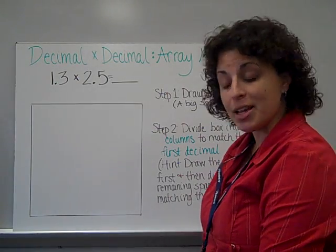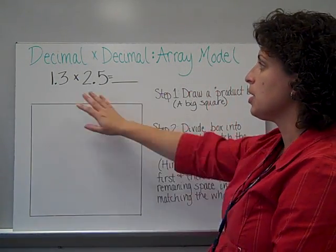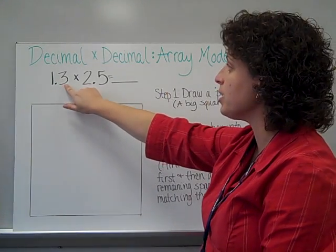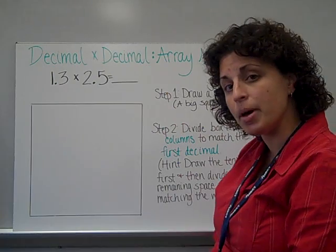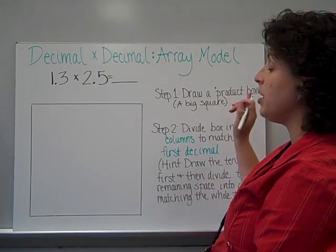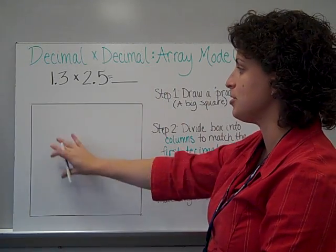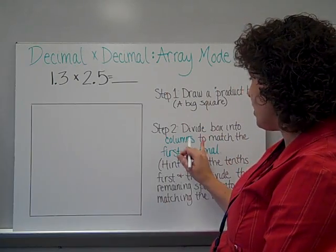Our next model is for a decimal times a decimal, and it's called an array model. Our problem this time is 1.3 times 2.5. And this model is a little bit more complex. The very first thing I need to do is draw a product box, because this is where my answer is going to be. And really all that is is a big square.